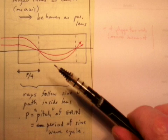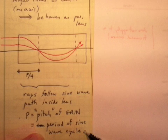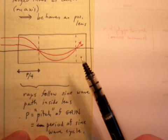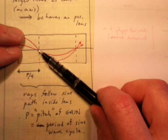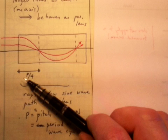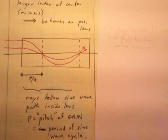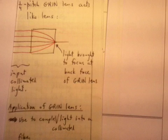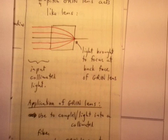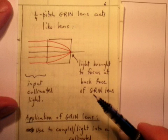The period of that sine wave is called the pitch of the GRIN lens. And it's this period of the sine wave cycle. And so this distance at which the parallel incoming rays are first brought to a focus is at a distance P over 4 into the GRIN lens. So what we can do is we can take one of these cylinders and chop it off so that we've got just a length of P over 4.